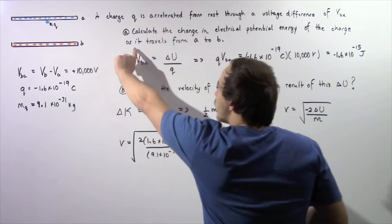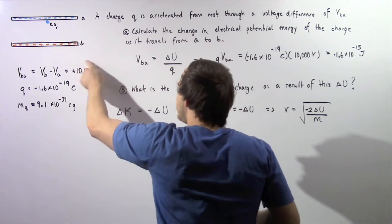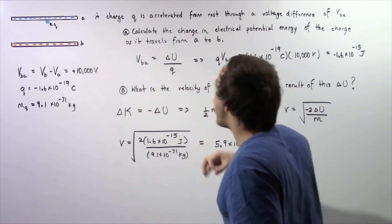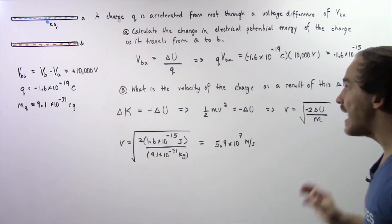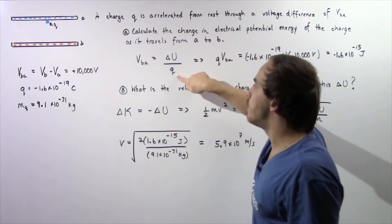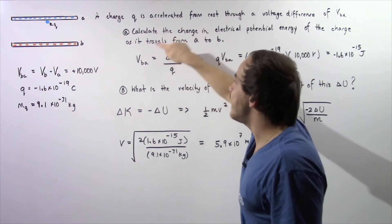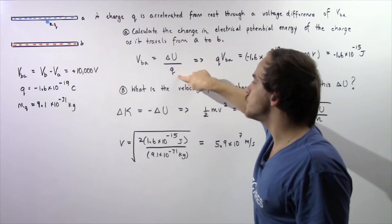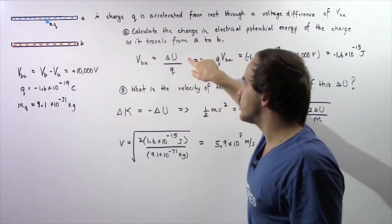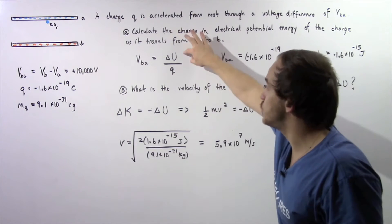The voltage difference VBA is equal to the change in electric potential energy of our charge Q. We rearrange this equation and solve for the change in U.